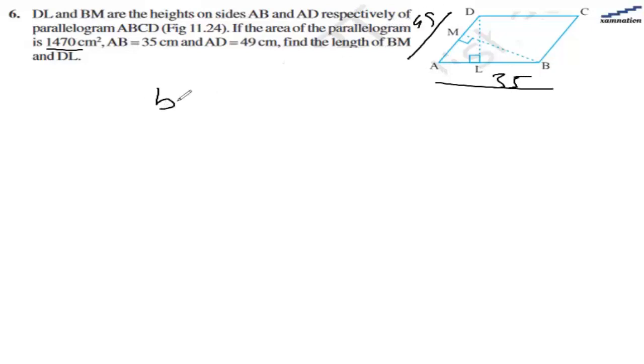We know the area of the parallelogram is base multiplied by height, and area is given as 1470. Let's say the base is AB, so 35 multiplied by height DL. DL will be 1470 divided by 35, and that will sum out to be 42.